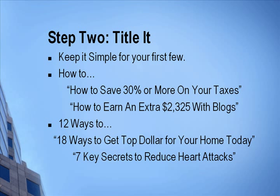The second title model is 'X ways to,' such as '18 ways to get top dollar for your home today' or 'seven key secrets to reduce heart attacks.' These are your list posts. You could also say 'seven steps to' for a step-by-step article. People want to know what the seven steps or 18 ways are — it works strongly on curiosity. So you have two good models: 'how to' and 'so many ways to,' and of course play around and try other titles as well.